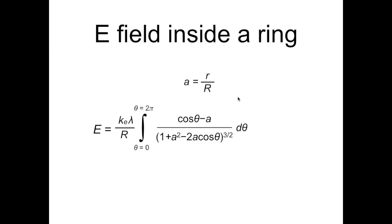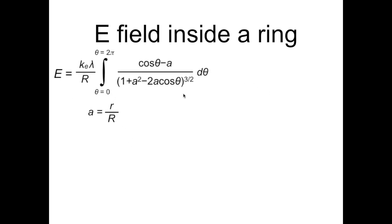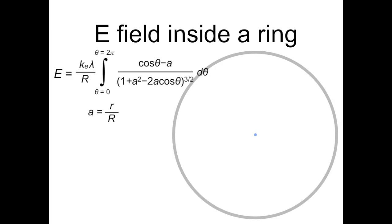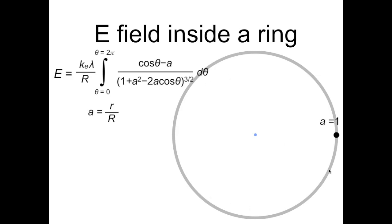Let's briefly discuss what this new variable A represents. Big R is the radius of the ring, and little r is the distance between the location whose electric field we're determining and the center of the ring. So if we were finding the E field at the ring center, little r would be 0, so A would be 0. Halfway along the radius of the ring, A is 0.5. Along the circumference of the ring, A is 1. And if we were actually outside the ring, where little r exceeds big R, A is greater than 1.